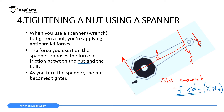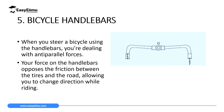The spanner applies the anti-parallel forces concept — the force you exert on the spanner opposes the friction between the nut and the bolt. As you turn the spanner the nut becomes tighter. To loosen it, you reverse the direction of the force: one side moves up and the other moves down automatically with the same force, making the nut less tight until you can open it.